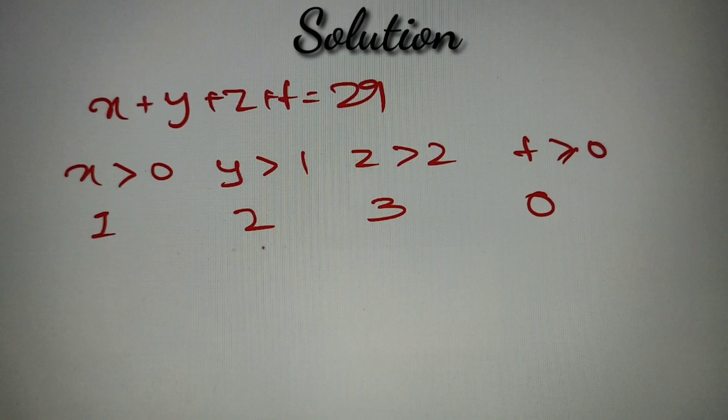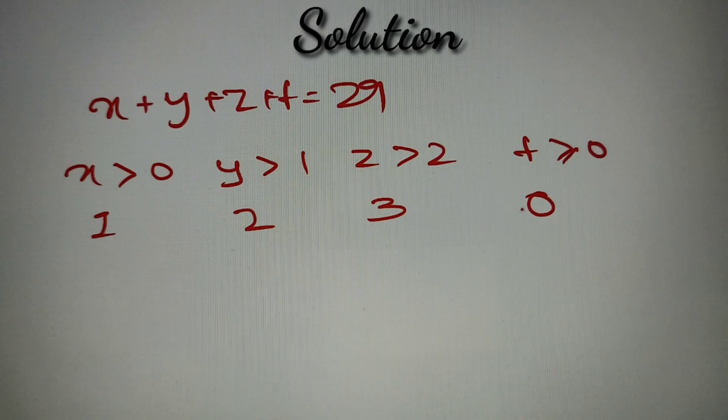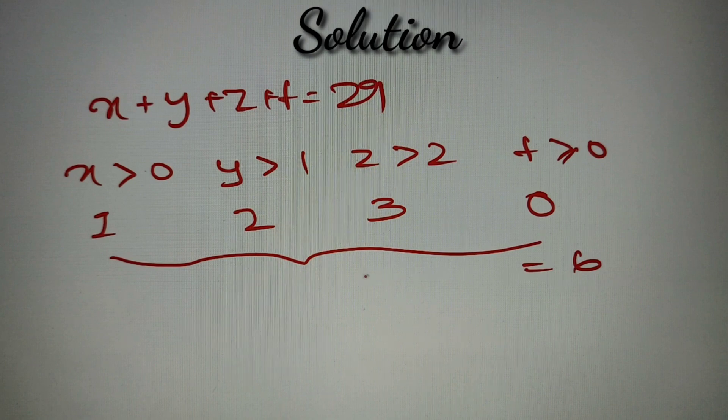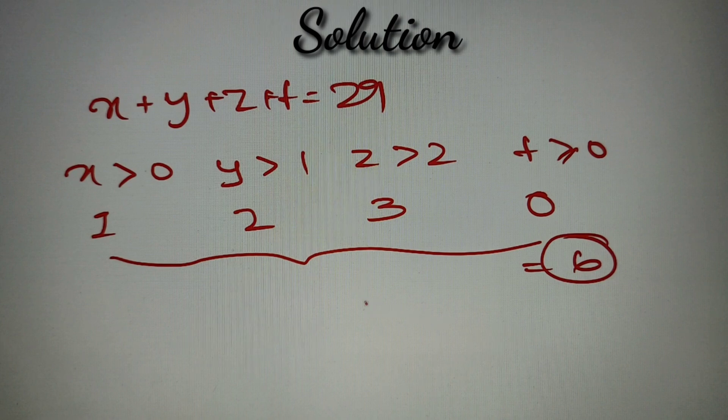Now since we have got all the minimum values of x, y, z, and t respectively, we just add them up. So we'll add them up and we'll get 1 plus 2 plus 3 plus 0, that is equal to 6. Now when we have got the minimum value of all the variables, then we'll subtract it from the RHS portion. So after subtracting 29 with 6, we'll get 23.